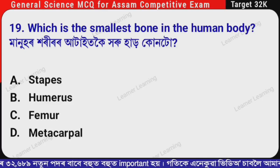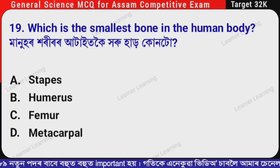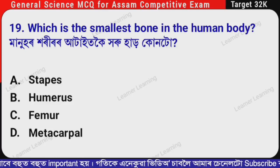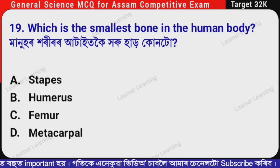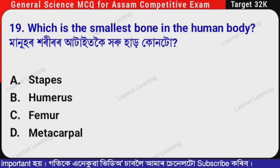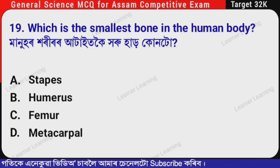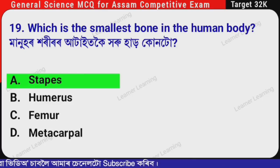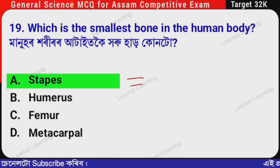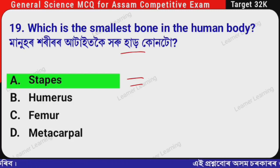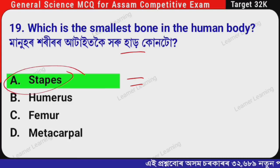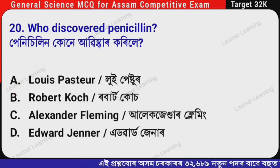Next question: Which is the smallest bone in the human body? (Assamese: Manophori rar attack kooyi huru hard kanta?) The correct option is Option A — Stapes. The stapes is the smallest bone in the human body.